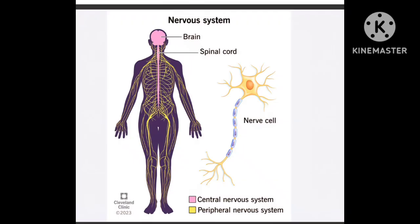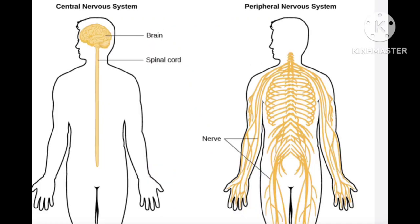The Nervous System of the human body is the master of all other systems because it controls all the other organs in the body. The nervous system can be basically divided into the central nervous system and the peripheral nervous system. The central nervous system is made up of the brain and the spinal cord, and all the other nerves present in the peripheries of the body are considered the peripheral nervous system.